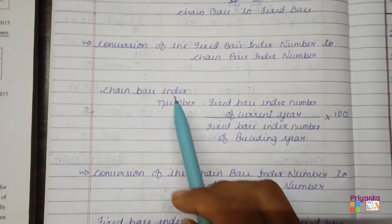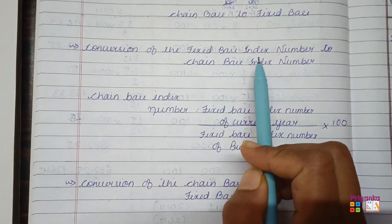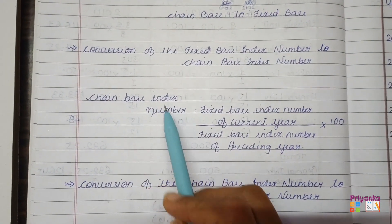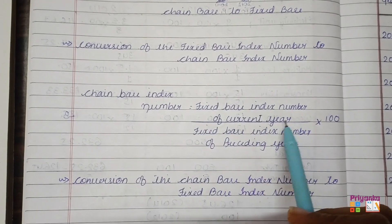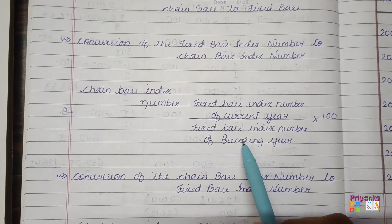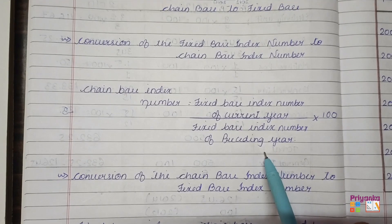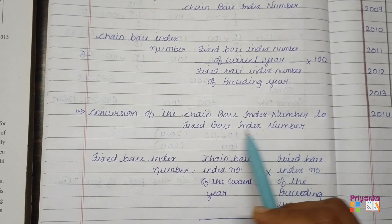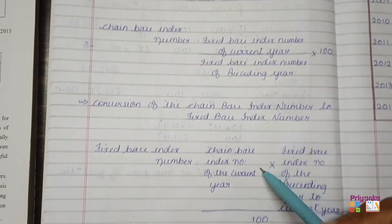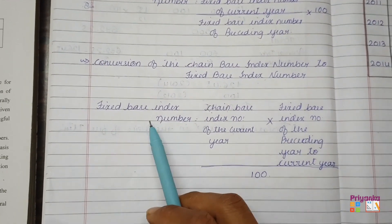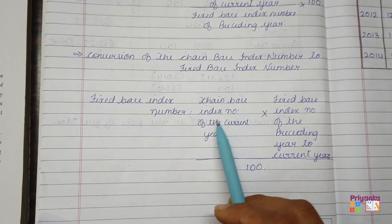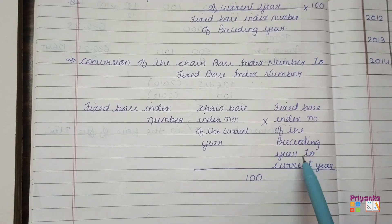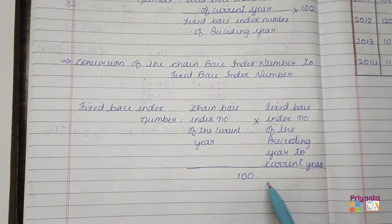Here the formulas are given. For conversion of fixed base index number into chain base index number, the formula is: Chain Base Index Number = (Fixed Base Index Number of current year ÷ Fixed Base Index Number of preceding year) × 100. For conversion of chain base index number into fixed base index number, the formula is: Fixed Base Index Number = (Chain Base Index Number of current year × Fixed Base Index Number of preceding year) ÷ 100.